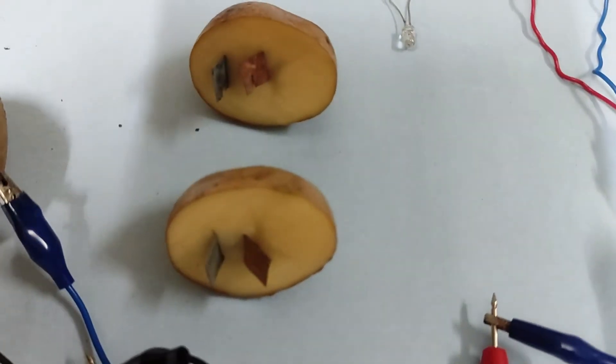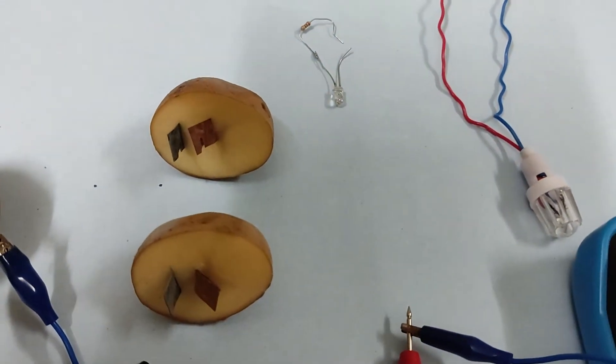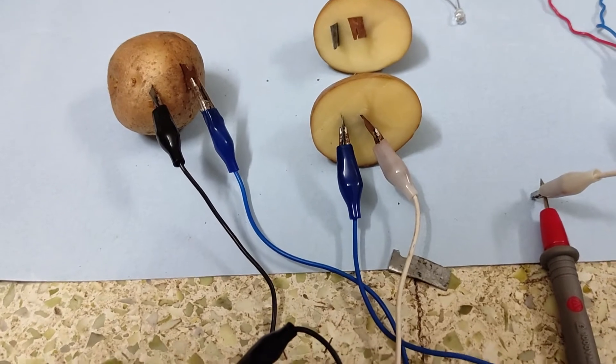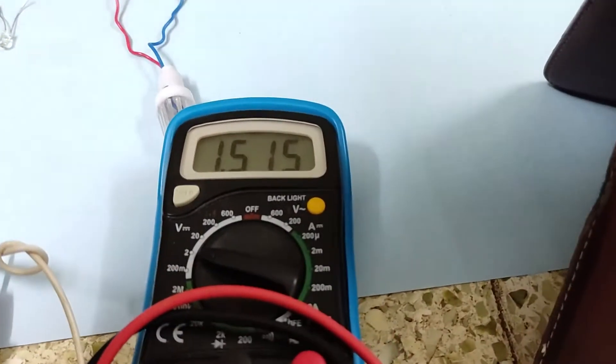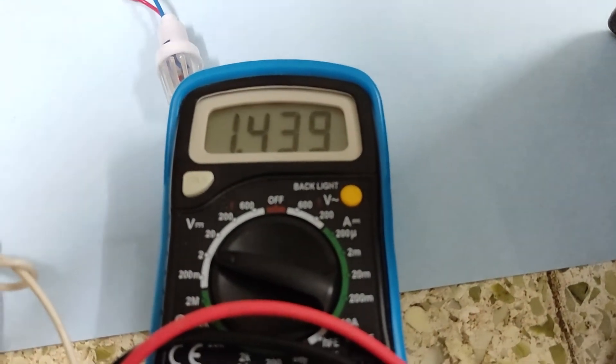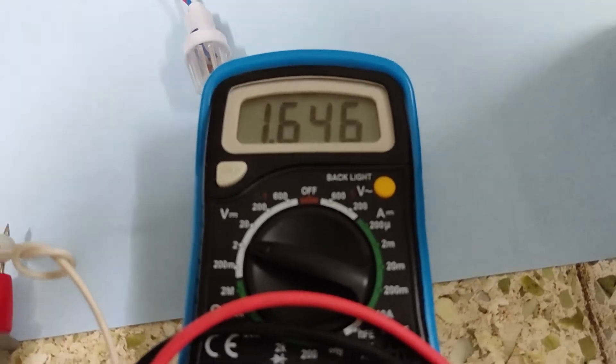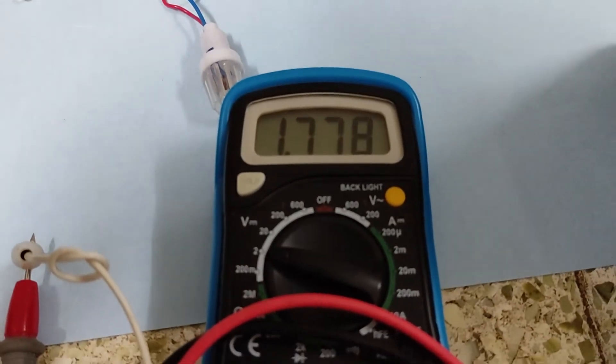Similarly, two other potatoes we will connect and check. Now, two potato batteries are connected. It is generating roughly 1.4 voltage. You see, 1.5, 1.6, it is varying. This much it is generating with two potato batteries.